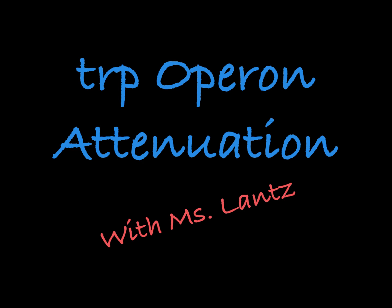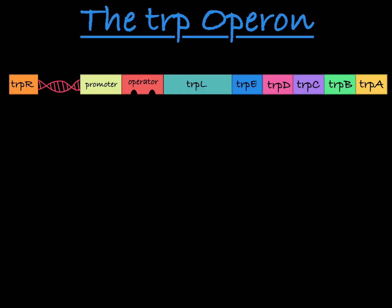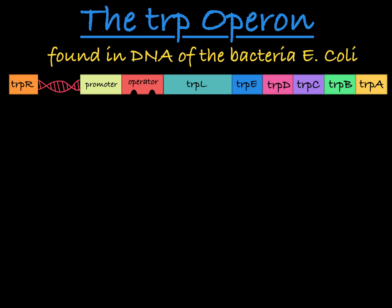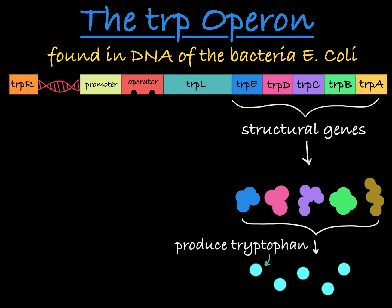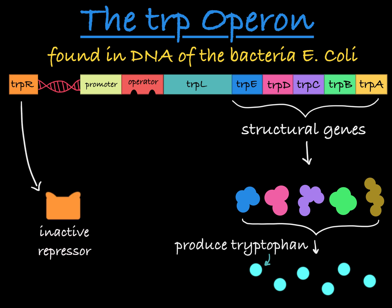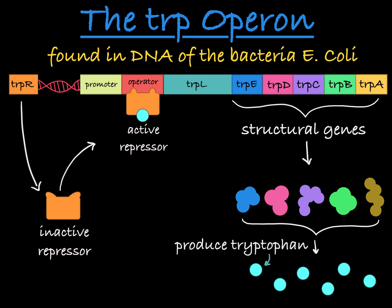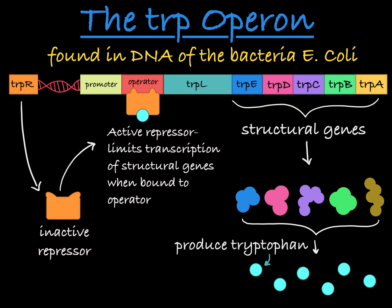Let's talk about trp operon attenuation. This is your trp operon, which we find in the DNA of bacteria E. coli. These five structural genes encode proteins necessary to produce the amino acid tryptophan. The trpR gene here encodes an inactive repressor that, when active, engages with the operator to limit transcription of the structural genes.